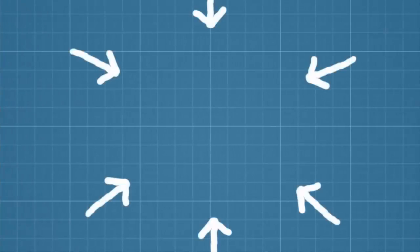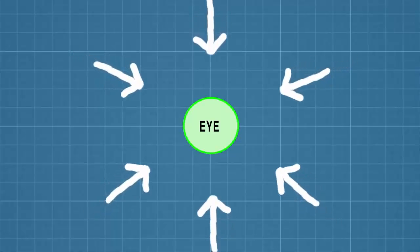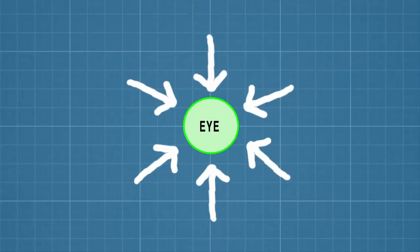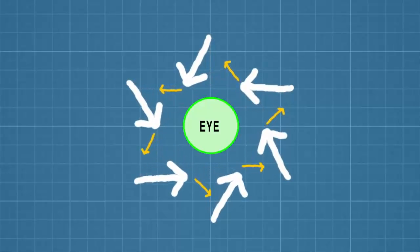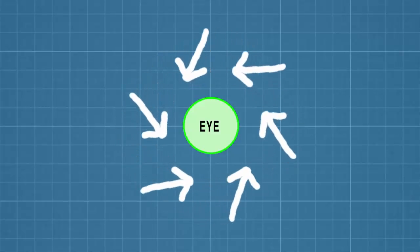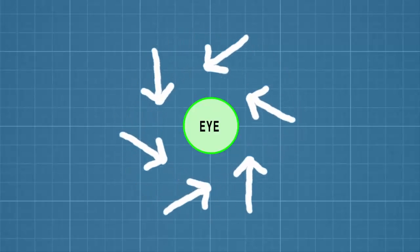But because of the Coriolis effect, the air rushing toward the center is deflected off course. In the northern hemisphere, the volumes of air on all sides of the eye keep getting tugged slightly to the right. The air keeps trying to make its way to the middle and keeps getting deflected, causing the entire system to spin in a counterclockwise direction.